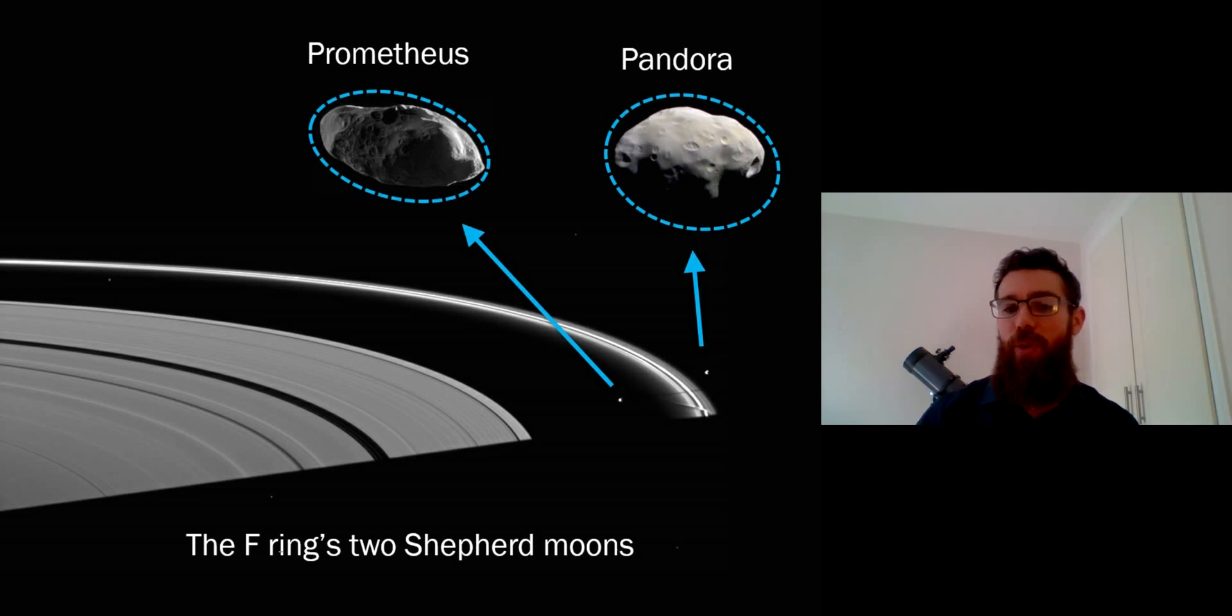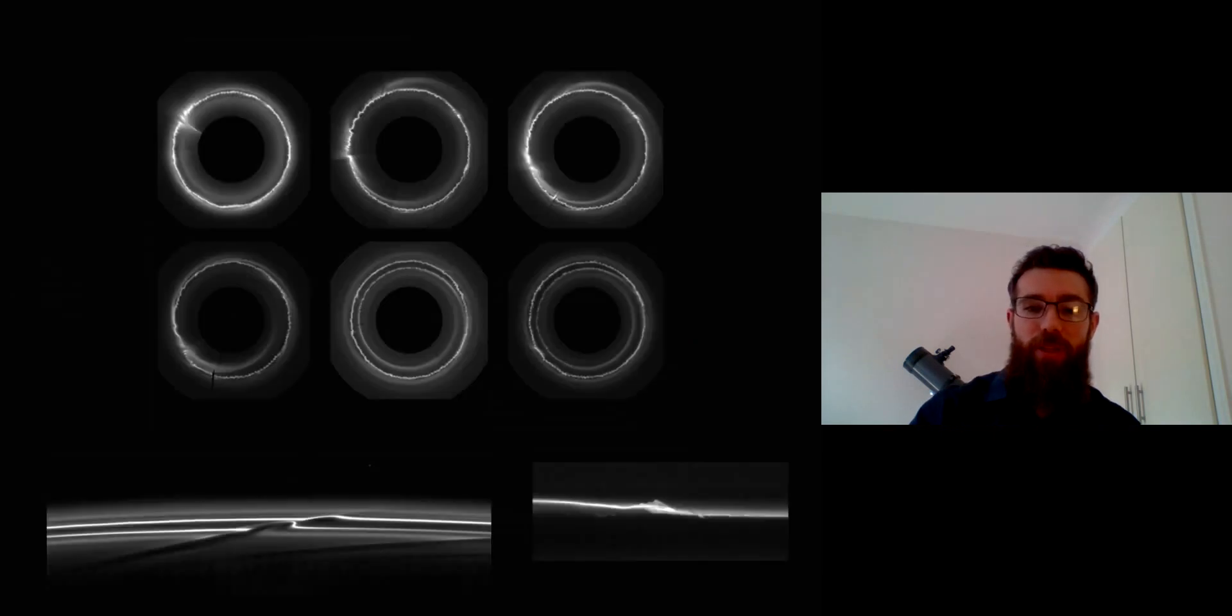They basically shepherd that ring—they keep all the ring material in place, which keeps it quite narrow. But they're not necessarily stationary; they wander around a little bit due to their orbits and they stir up the F ring, so it's not a nice even structure. If we look at these images taken at different times, you can see that the main F ring is changing quite significantly over time due to the interactions with these nearby moons.